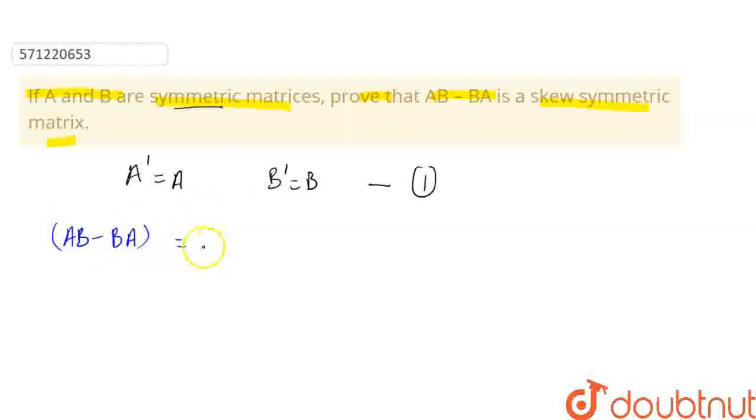Skew symmetric means that transpose of AB minus BA will be equal to the negative of AB minus BA, the whole matrix. Or we can say that A transpose will be equal to minus A. This is a skew symmetric matrix.